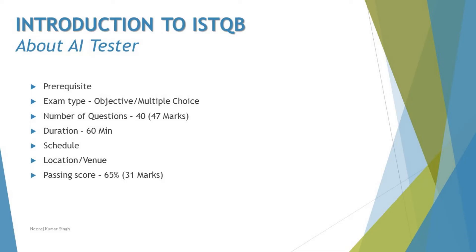Regarding the exam type, it remains objective — there are no subjective examinations in AI Tester. Like many other ISTQB certifications, you only have multiple choice questions: one question with four options, and you pick one right answer. However, since these are specialist questions, some questions can have multiple selections as well — not all, but a few questions may have five options where you need to select two correct answers. The total number of questions in the examination is 40.